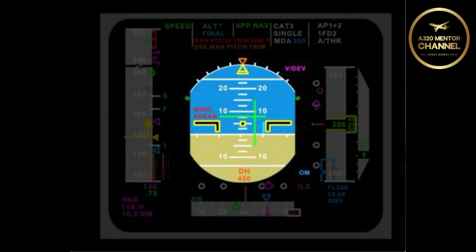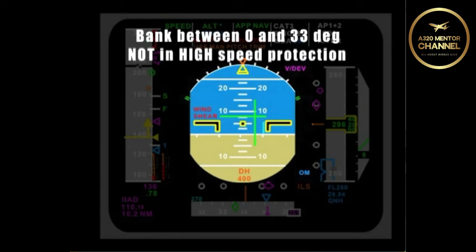What about a bank angle between zero and 33 degrees? Between zero and 33 degrees and not in high speed protection, the aircraft will maintain whatever bank angle it is at.